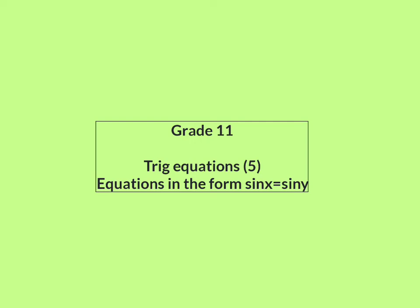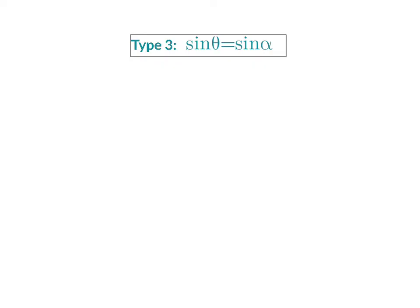In this lesson, we're going to have a look at trig equations in the form of sin x equal to sin y. Our third type of equation is where we have sin theta equal to sin alpha. The trig function on the left and right are both the same — this can be cos or tan as well — but the angles are now different.